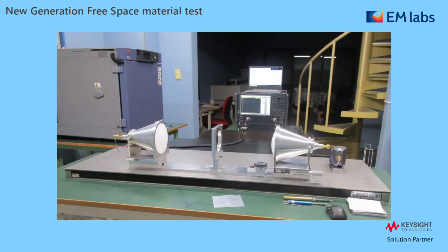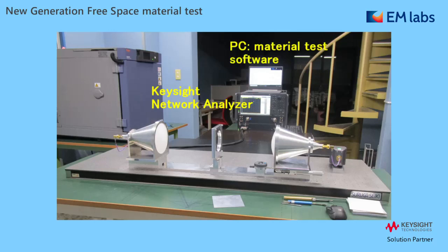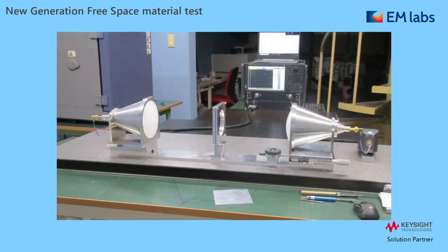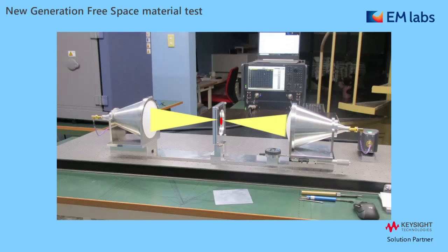With that, let's see our solution more closely. It consists of a Keysight network analyzer, a PC running the material test software, and our free space fixture. There are two lens antennas and a sample holder. The test signal is focused and applied to the material, then detected by the other antenna to analyze the signal change caused by the material.